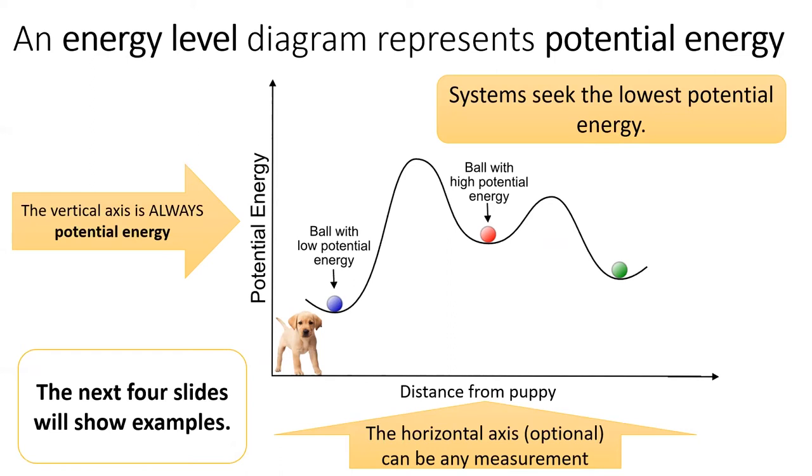Just as a ball rolls down a hill, a chemical system will naturally seek the lowest potential energy. The difference between where the ball started and where the ball ends up is the change in energy. The next four slides will show examples of energy-level diagrams, and each example will bring us a little bit closer to chemical systems.